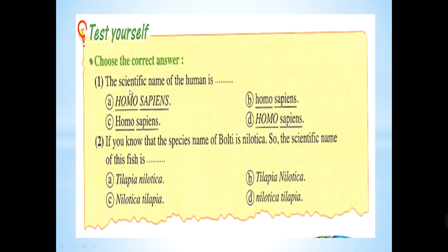Test yourself: which is the correct scientific name of the human? The answer is letter C — because the first word starts with a capital letter and the second word does not, and both words are underlined. Another question: if you know that the species name of Bolti fish is nilotica, what is its scientific name? The answer is letter A — Tilapia nilotica — because the first word starts with a capital letter and the second word, representing the species name, starts with a small letter.